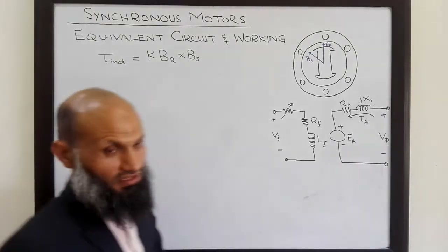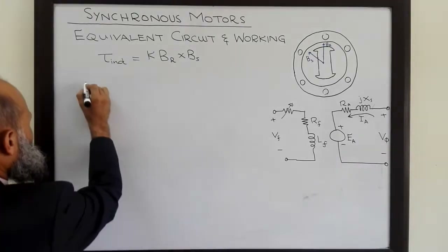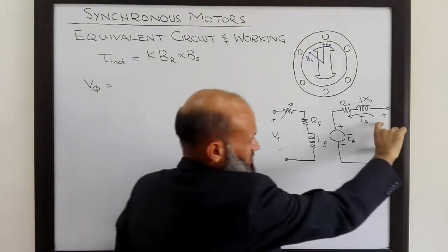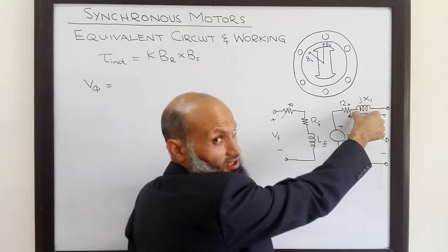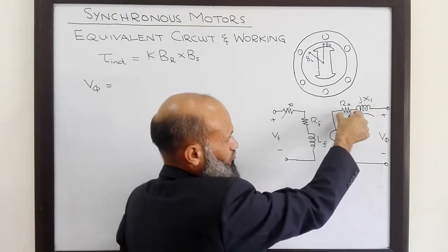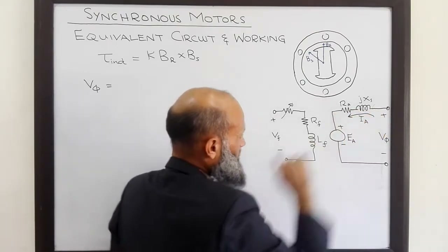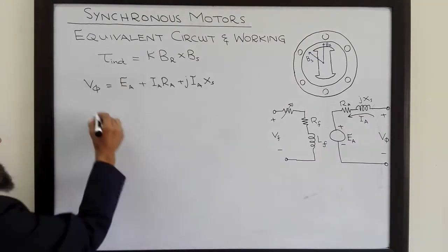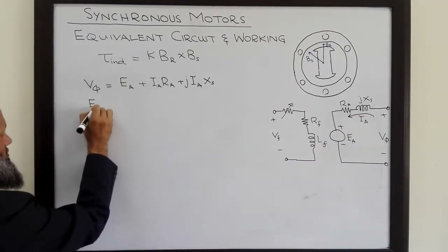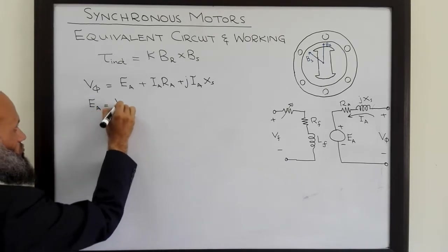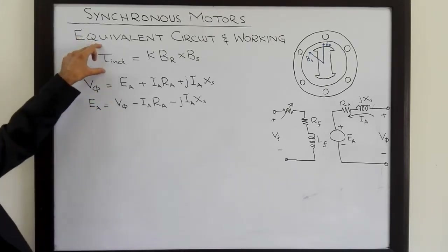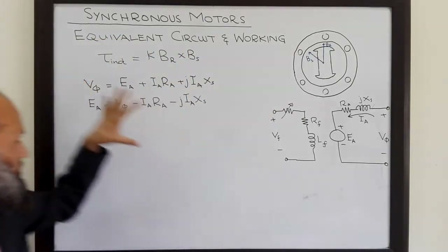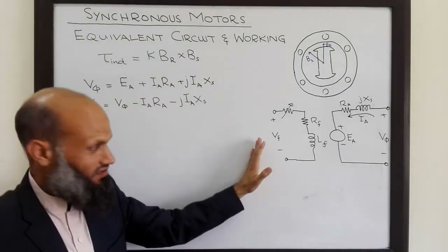So for a synchronous motor, V_phase equals the voltage drop across the inductive reactance plus the voltage drop across the resistance plus EA. That is, V_phase = EA + IA*RA + jIA*XS, which can also be rearranged as EA = V_phase − IA*RA − jIA*XS. So we have talked about the working principle of synchronous motors and the equivalent electrical circuit. This working principle can also be explained in another way using phasor diagrams.